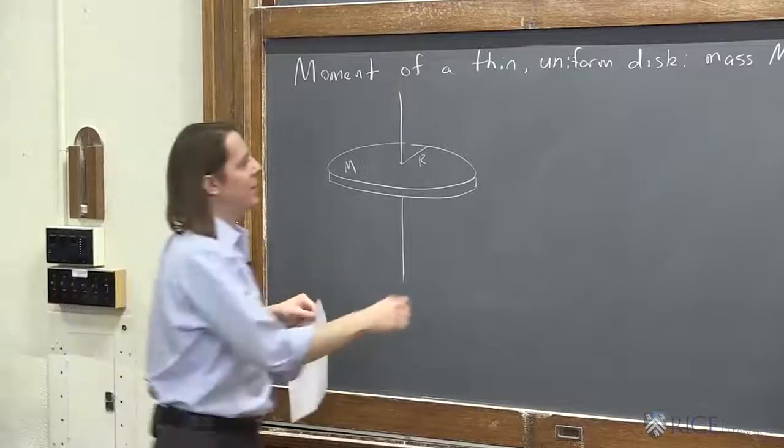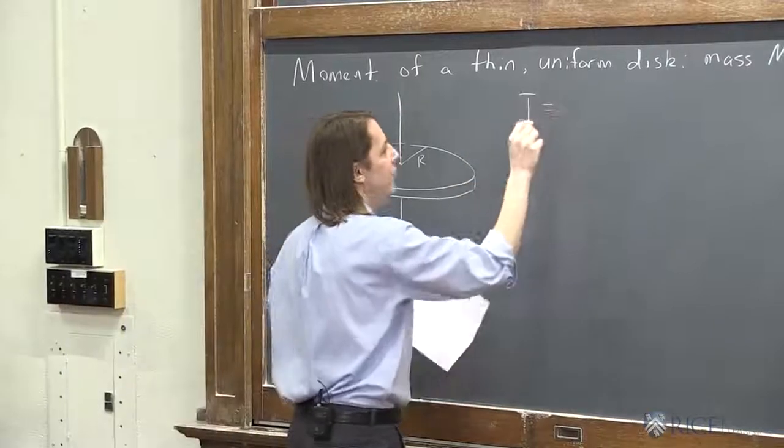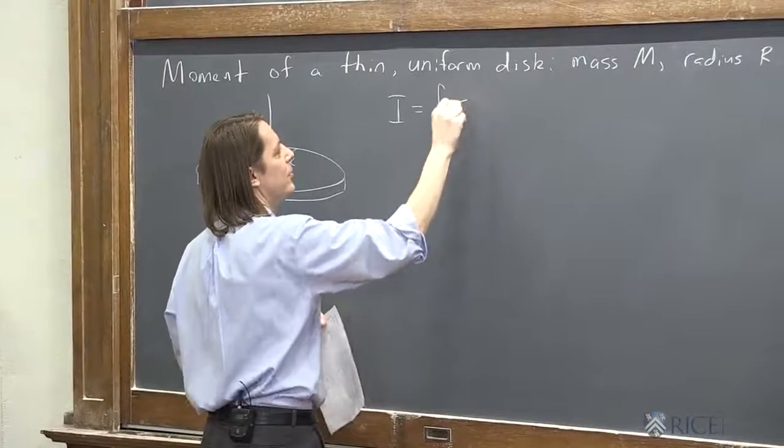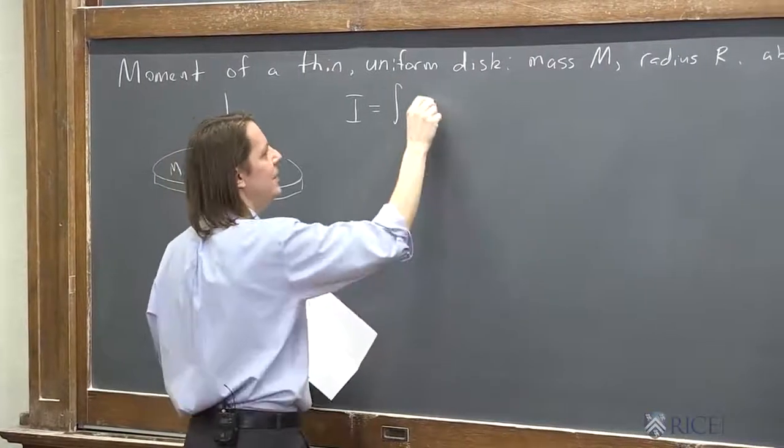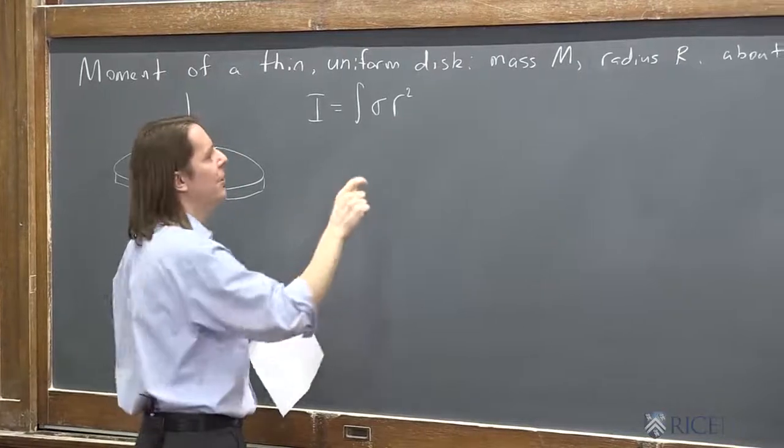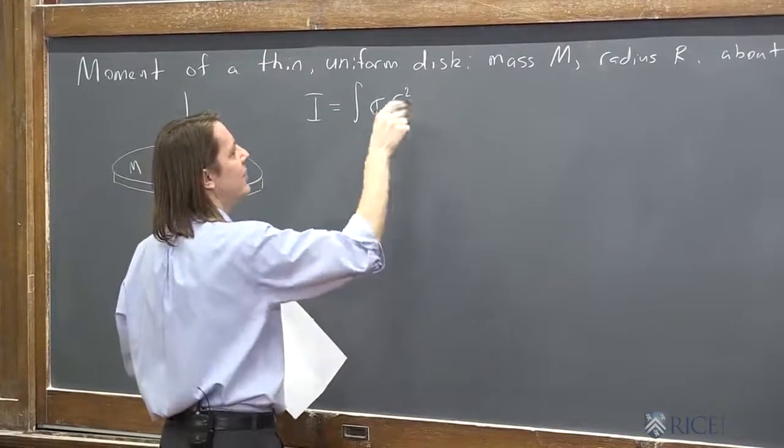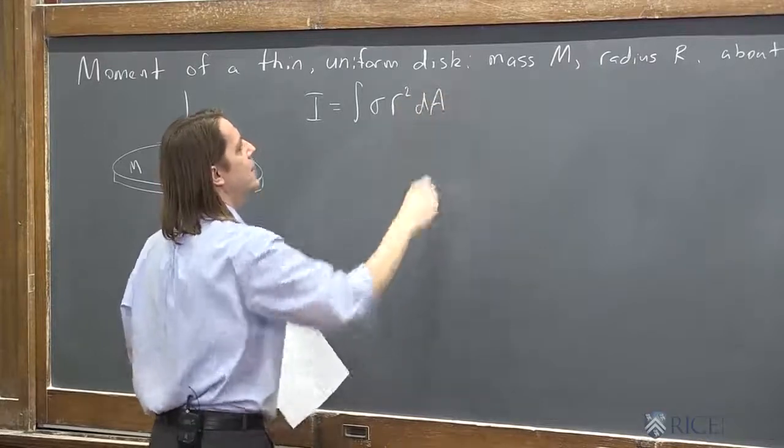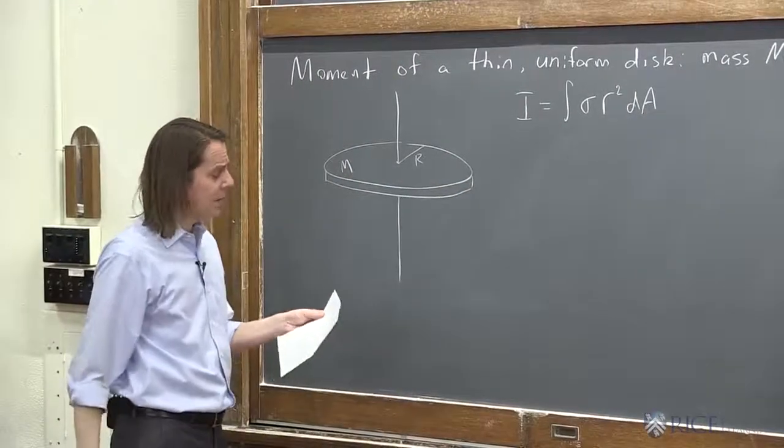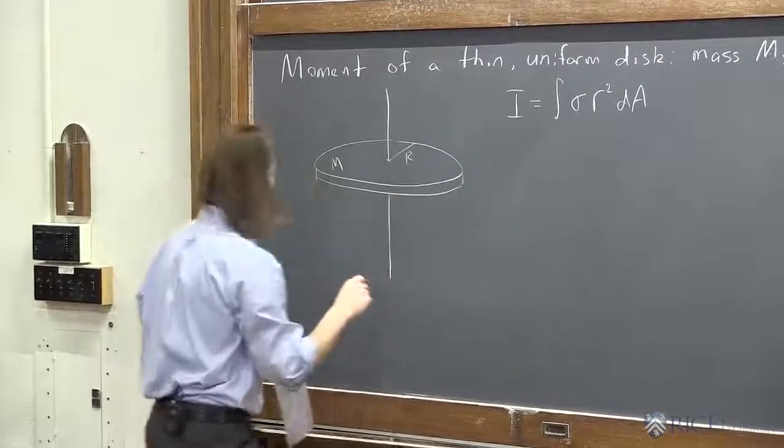You may recall we decided that the moment for a 3D object, in this case a 2D object, is the integral of the surface mass density times R squared, where R is just the separation of each mass element from the axis of rotation. And in this case, we need a dA.